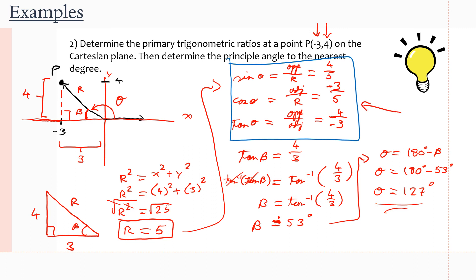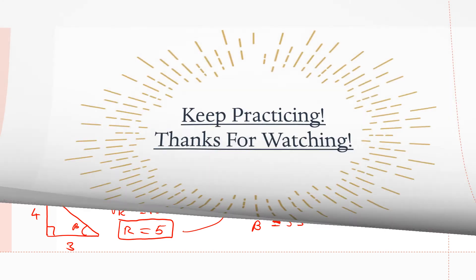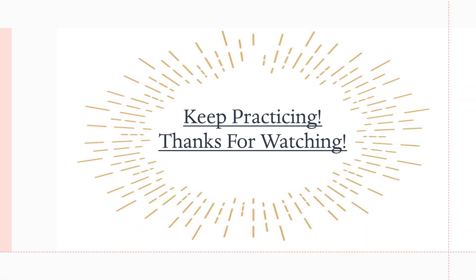That's our principal angle, and those are our ratios for sine, cosine, and tan. If we want to check our answers, we plug theta back in: sine of 127, cosine of 127, and tan of 127, and verify we get the same ratios with the correct signs. And that is it for the video. If you want more practice — and I suggest you do — go back to the theory video, look for the textbook questions, and keep practicing. Thank you so much for watching, and I'll see you in the next theory video.